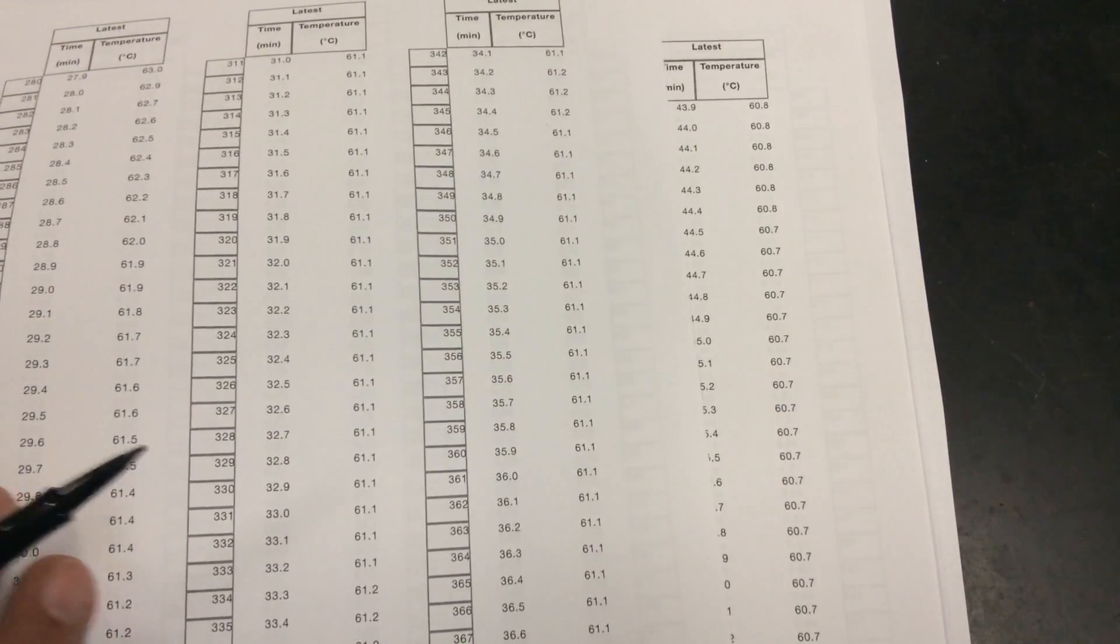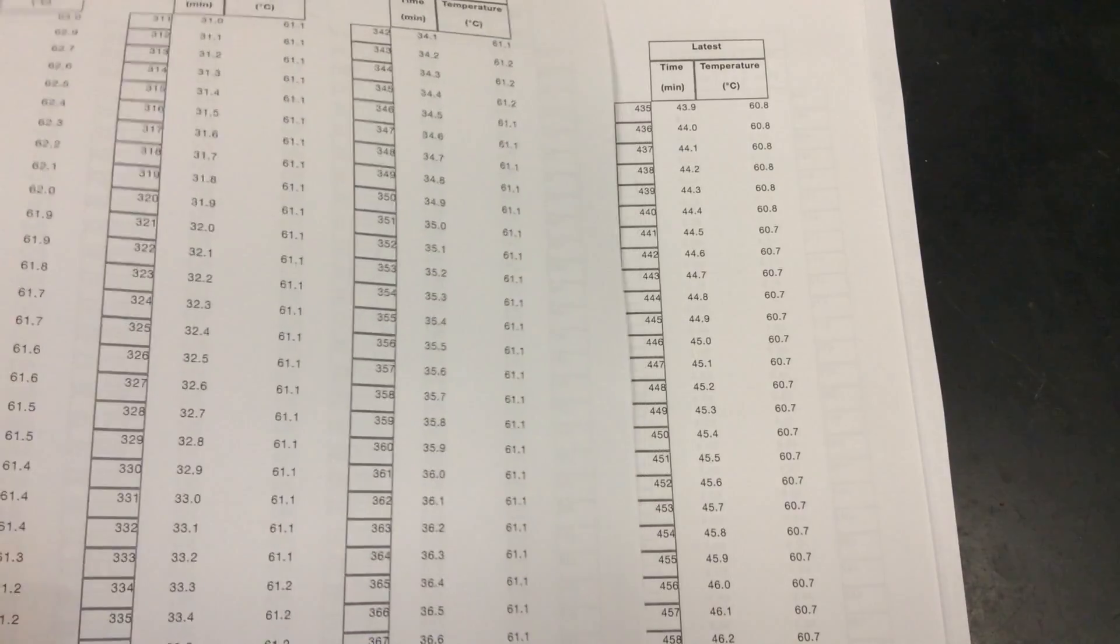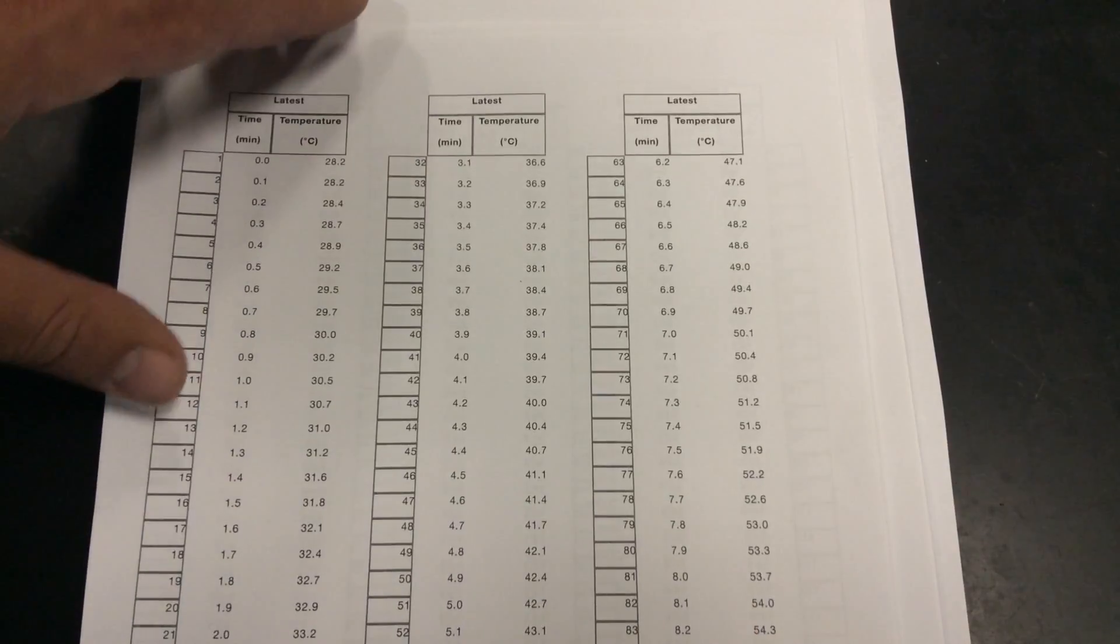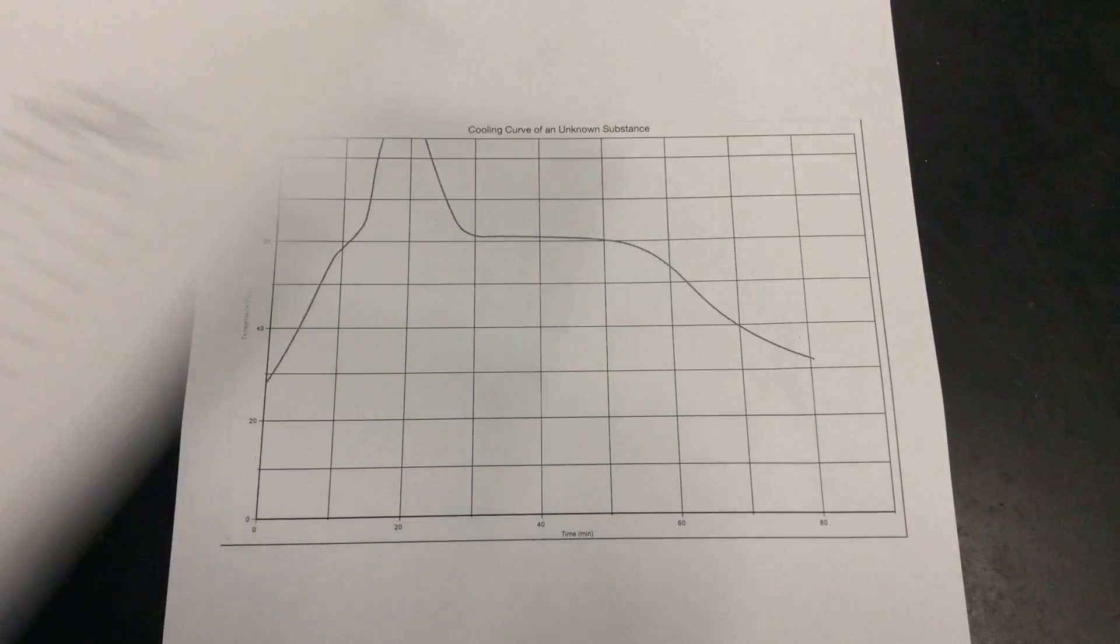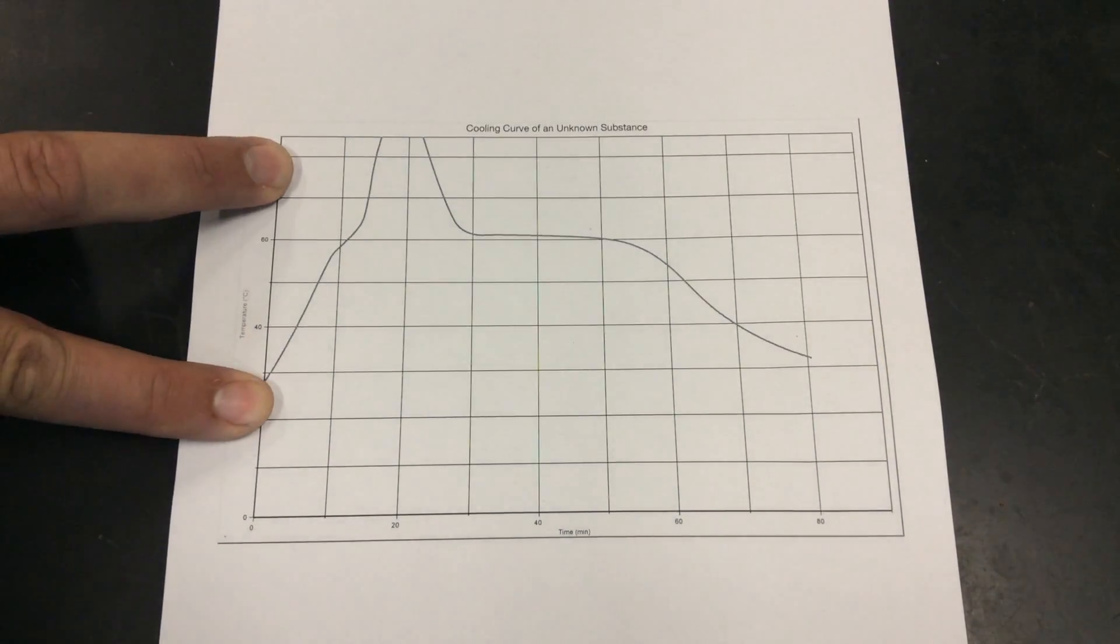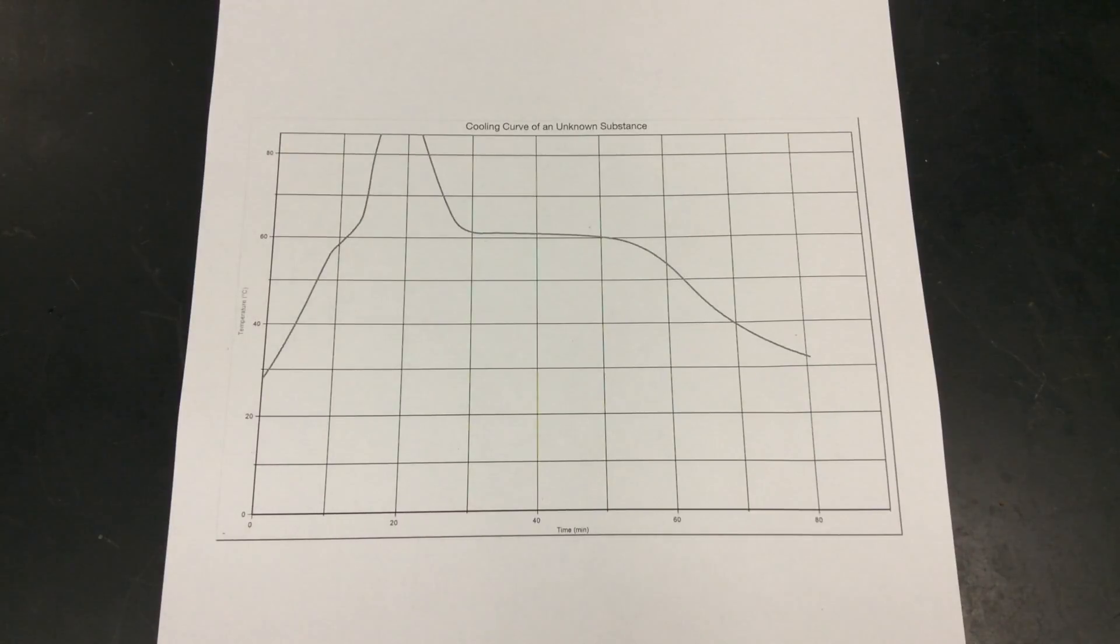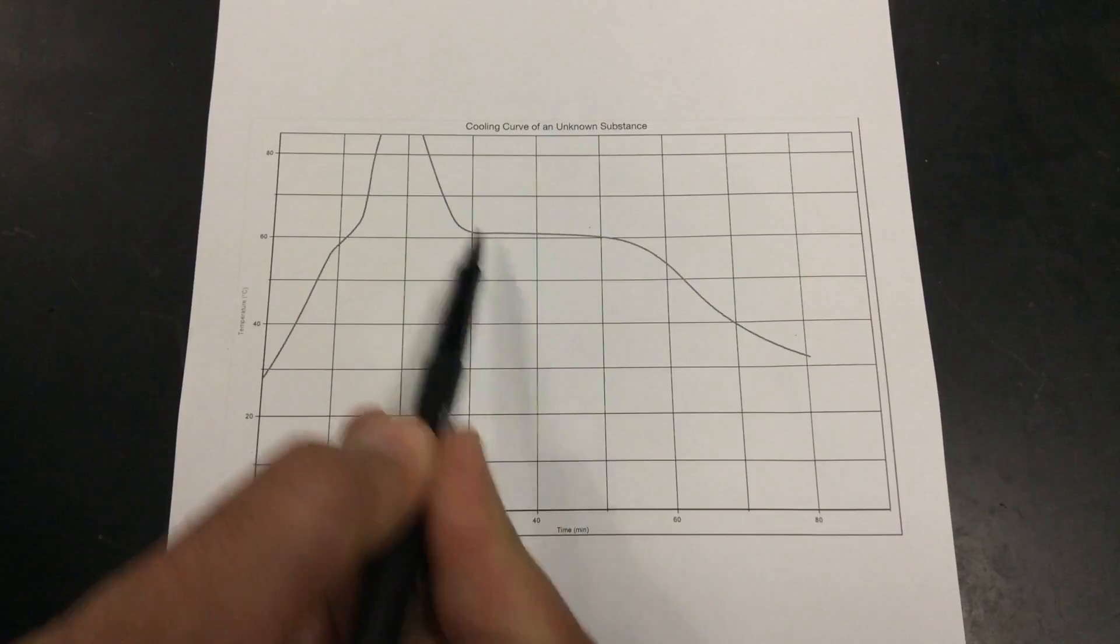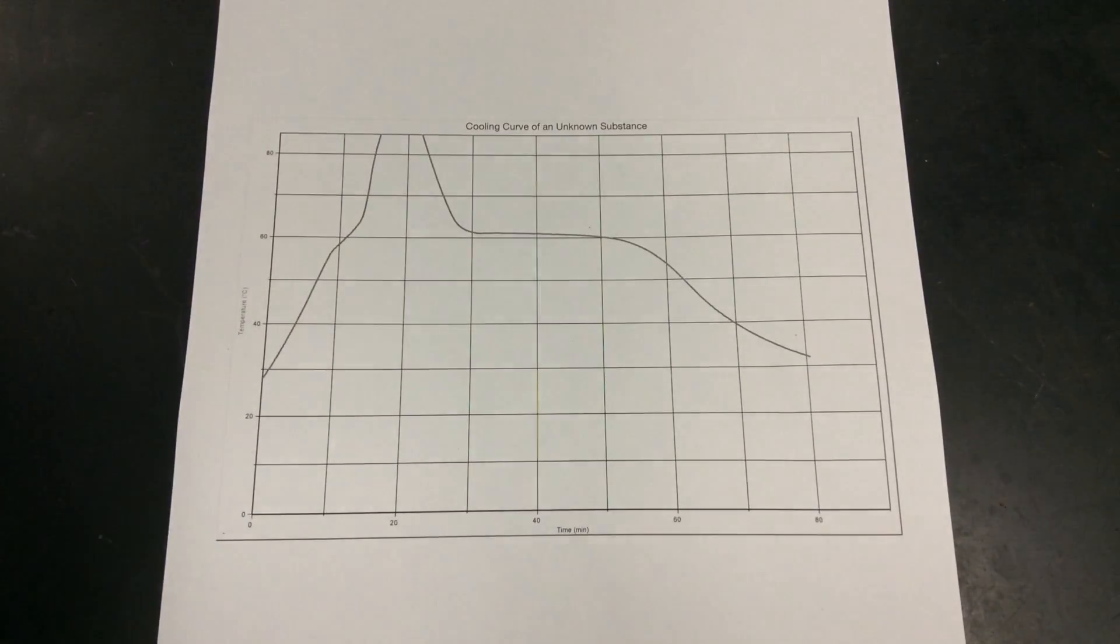Where they stay the same the most is what your actual melting or freezing point temperature is. I want you to circle them. I want you to just take the page that shows the temperatures that are staying the same the most, circle them, and attach it behind your graph. The values that you just circled, which represent the time and place where you think they're staying the most constant, that's your experimental melting point.